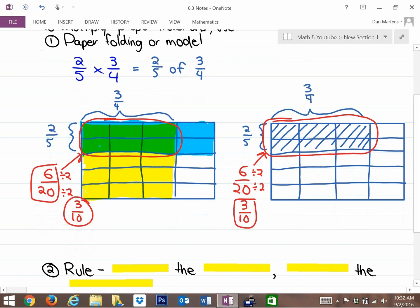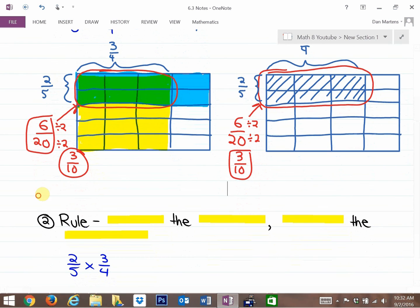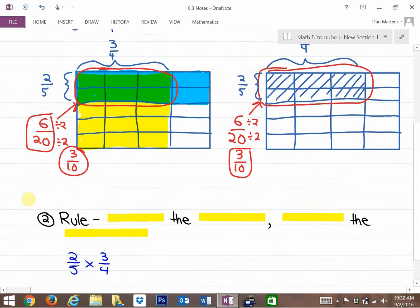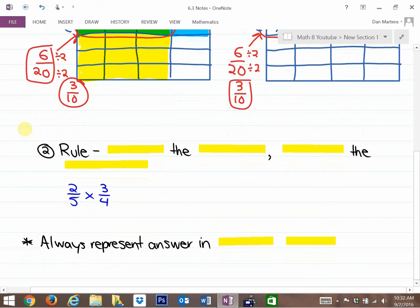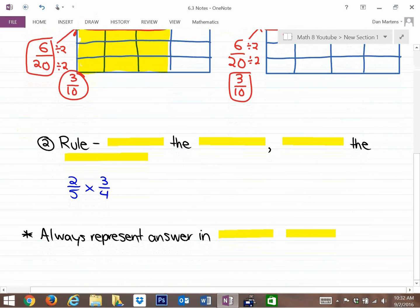So that's the paper folding or model method. It doesn't matter which one you choose to use when you're describing how to multiply a proper fraction by a proper fraction. And what you may notice is there's actually a rule to use. And if you investigated the pattern for how to get the answer, what we notice is that to get the answer, all we have to do is multiply the numerators and multiply the denominators. And this works for proper fractions times proper fractions.